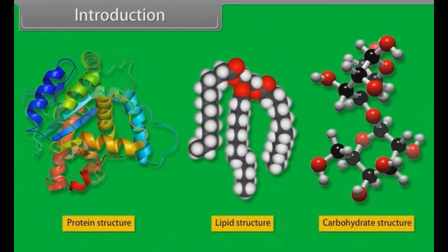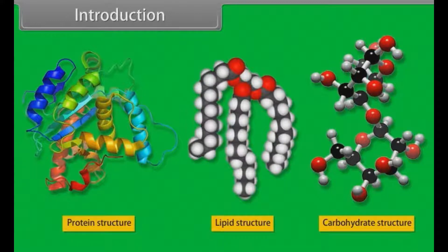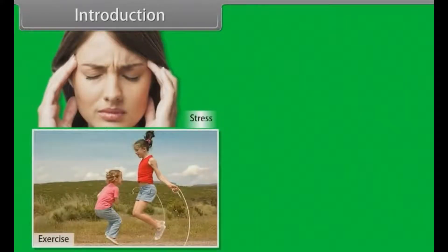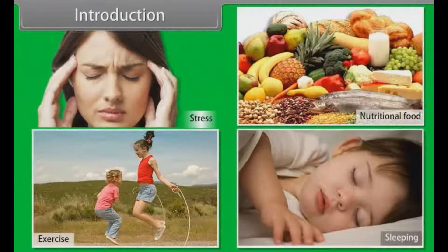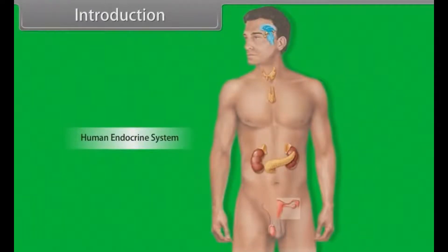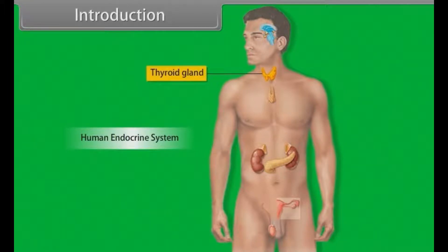Growth hormone has a significant effect on the metabolism of protein, lipid and carbohydrates. The production of growth hormone depends upon many factors such as stress, exercise, nutrition, sleep, etc. There are several other hormones secreted within the body which perform specific functions, such as calcitonin, which is secreted by the thyroid gland and helps in regulating the level of calcium in blood. Throughout this module we learn about chemical coordination and integration.